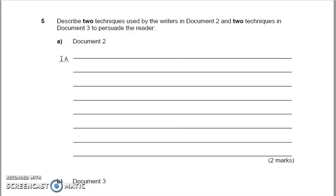What it's asking you to do is identify language techniques. If you're a bit rusty on that, I really recommend you hop back on the Moodle and have a go at some of those tasks and watch some of those videos again. The important thing to look at is what the question says: describe two techniques used by the writers in document two and two techniques used by the writers in document three to persuade the reader. Describe is not the same as identify. If it was identify two techniques, you would get away with just identifying techniques — you could just say emotive language or rhetorical question. So what you've got to think about is how those techniques work as well.